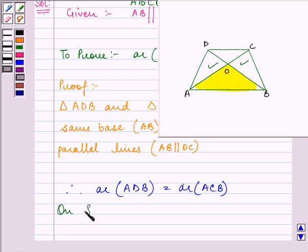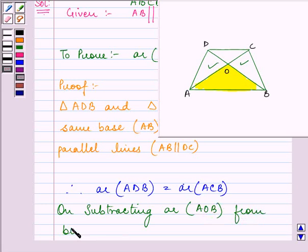So on subtracting area of triangle AOB from both sides, we get... Now from the area of triangle ADB, if we subtract this area, we are left with this area.